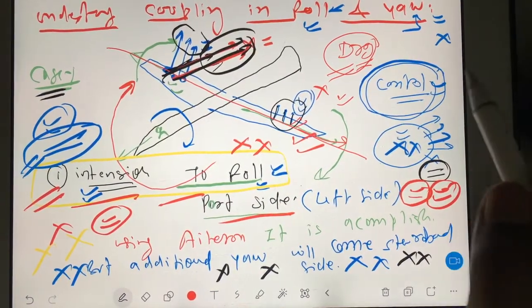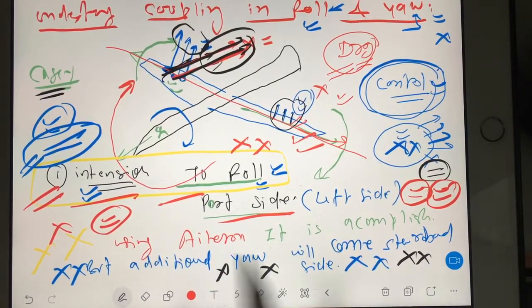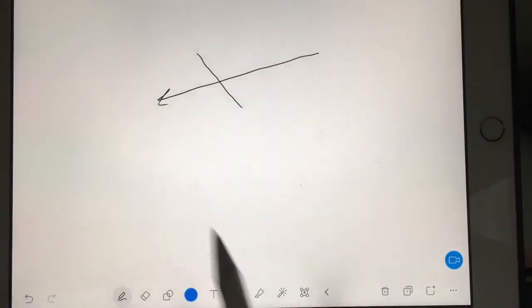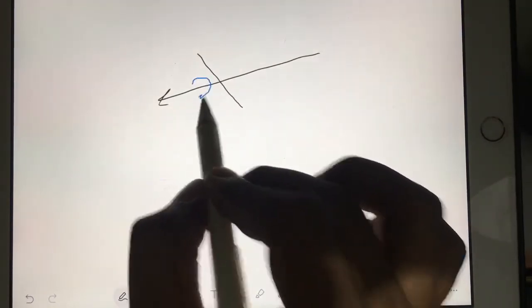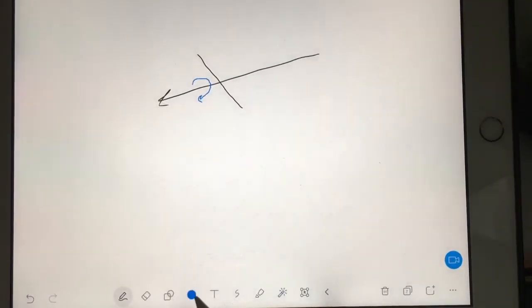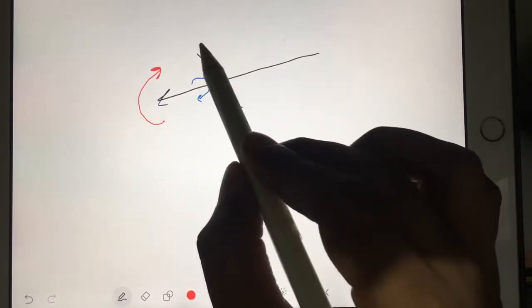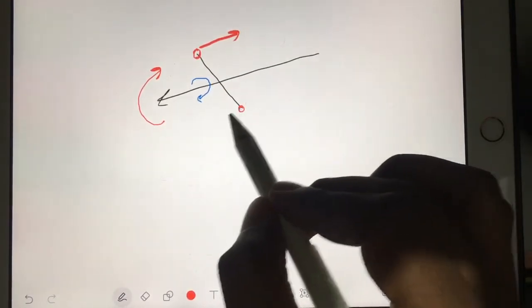So I will take the situation again. See, now aircraft is going in this direction, so pilot is turning aircraft in this direction. Because of that, you know that it will yaw in this direction. It means the starboard wing will go back side and port wing will come front side.